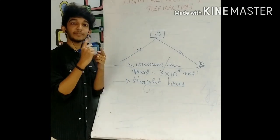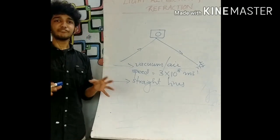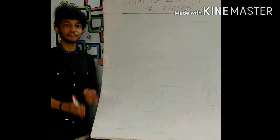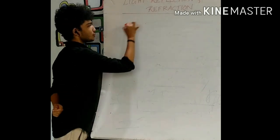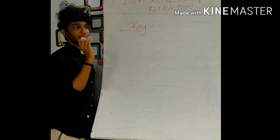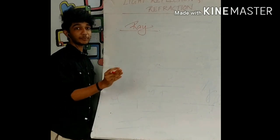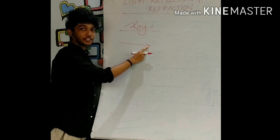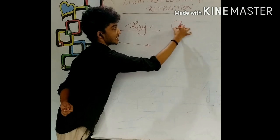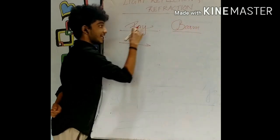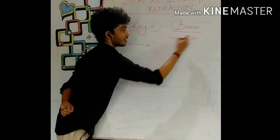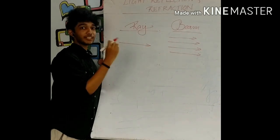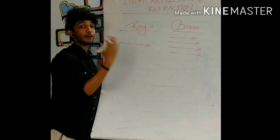As you might have heard, light can be a light ray or a light beam. What is the difference between a ray of light and a beam of light? A ray of light means a simple straight-line representation of the propagation of light, with the arrow pointing in the direction of propagation. A beam of light means a collection of rays of light — in other words, a bundle of adjacent rays.